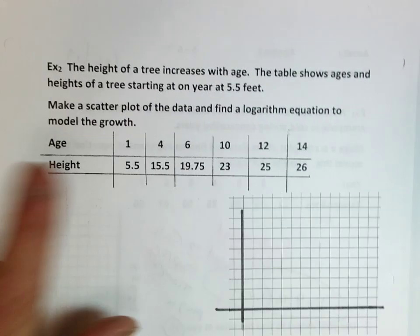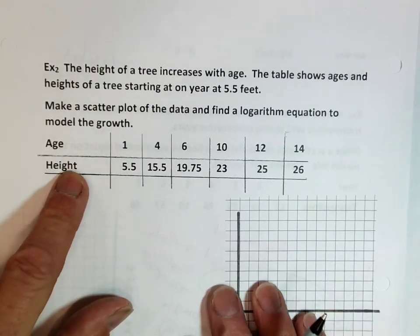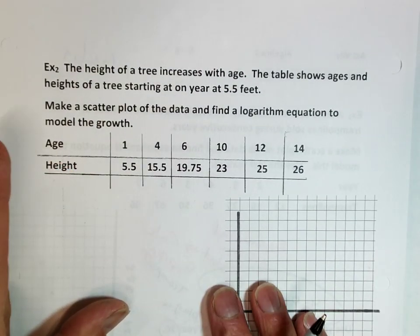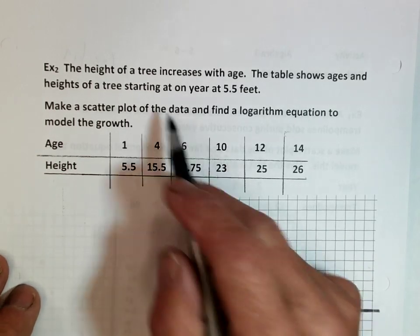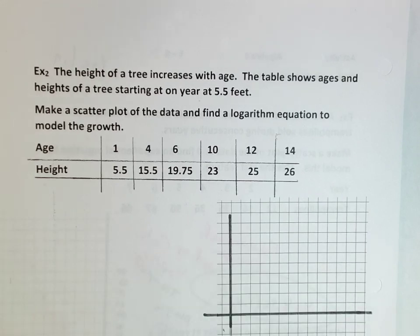Example two. The height of a tree increases with age. The table shows the ages and heights of the tree starting at year one at 5.5 feet. Now think about this. We all know about trees. They're like people. They go really fast in the beginning, but then they slowly slow down. If you think about it, their growth rate should look like this. They're going to grow, but when they're super tall, they start to slow down. So it should be a log function. Let's graph it first.